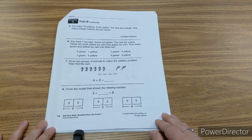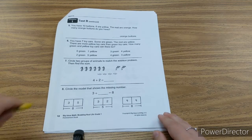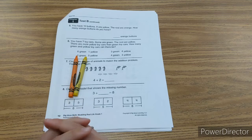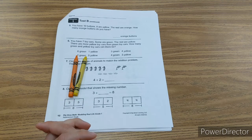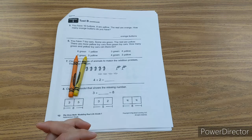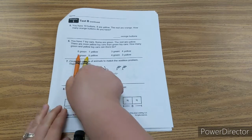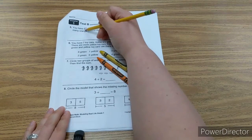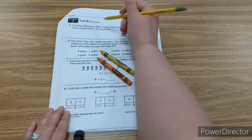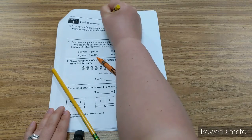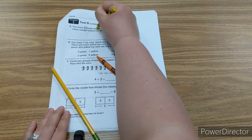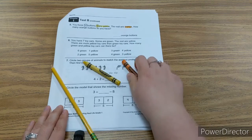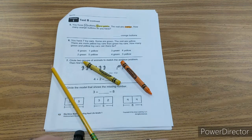You have ten buttons. Eight of them are yellow and the rest are orange. So you're going to want to draw your buttons using your crayons. You know you have ten buttons all together, and you know eight of them are yellow. The rest are orange. So you need to figure out how many orange buttons you have.